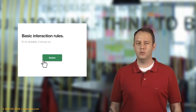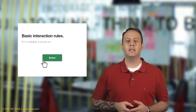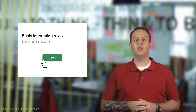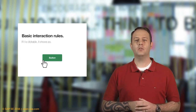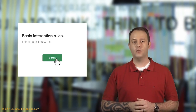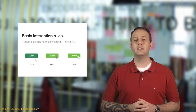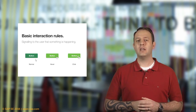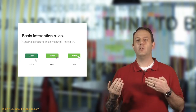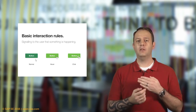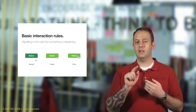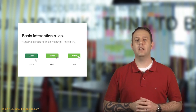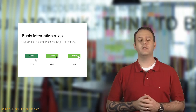Let's talk about interaction rules. The basic interaction rule is that if something is clickable, it should show that it's clickable. For example, the cursor should change to a hand when the user hovers over a button. It's also important to signal that something is happening on click. When the cursor is outside a button it stays as a cursor, then hovering over a clickable element it changes to a hand, and when the button is clicked the button itself could change color. Any clickable element should have a clear design for all three of those stages.